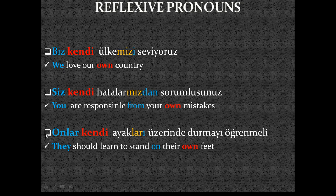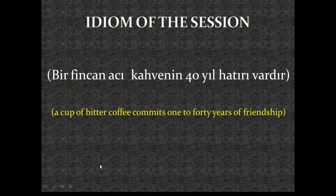For third person plural: 'Onlar kendi ayakları üzerinde durmayı öğrenmeli' — they should learn to stand on their own feet. The possessive adjective onların is dropped. Ayak = foot, ayakları = their feet (possessive suffix 'ları' for third person plural), üzerinde = on, durmayı = to stand, öğrenmeli = should learn.